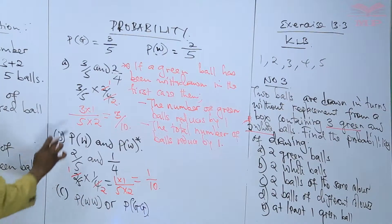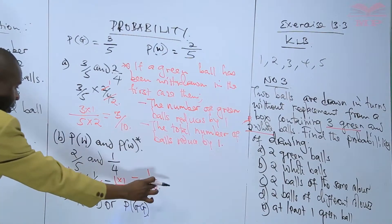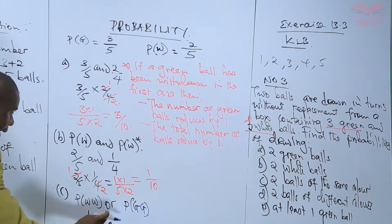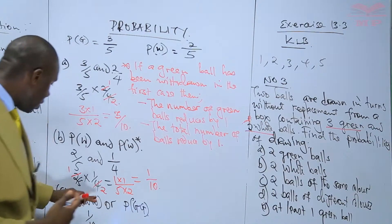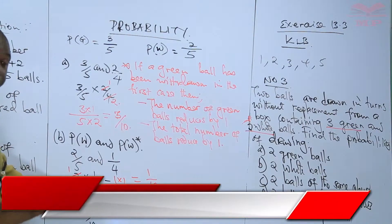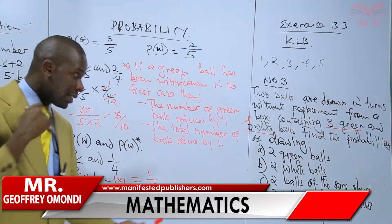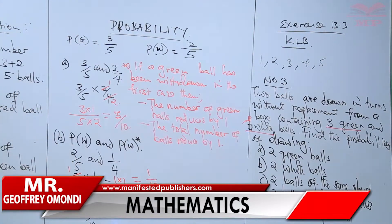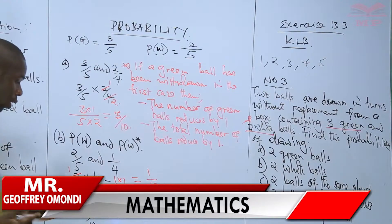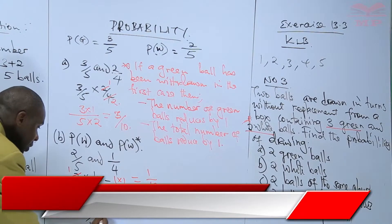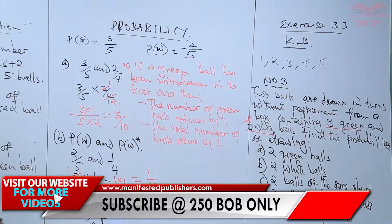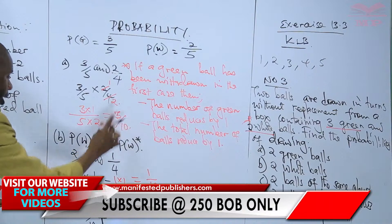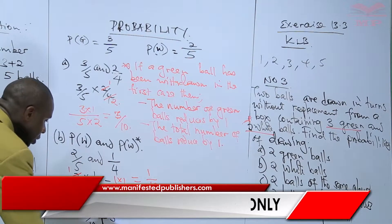Probability of white-white is one over ten. These are mutually exclusive events — you cannot have white-white and at the same time have green-green. So if you pick white-white, you won't have green-green. When talking of mutually exclusive events, 'or' is represented by the plus symbol.